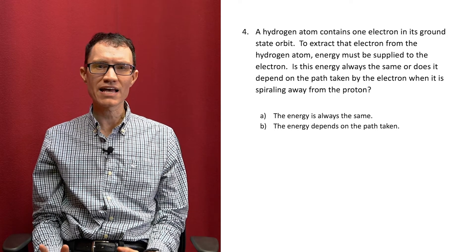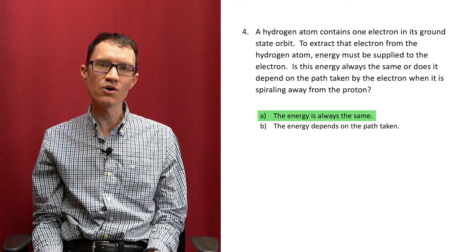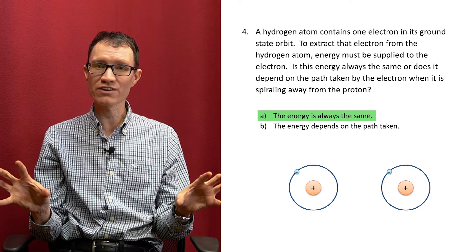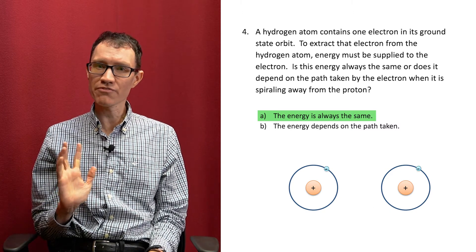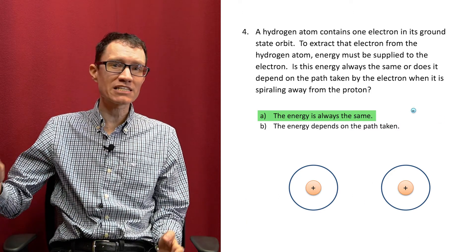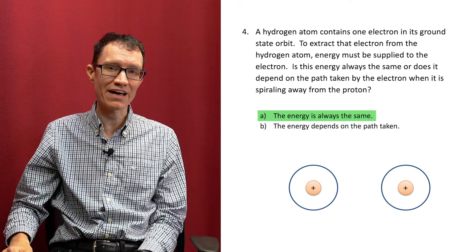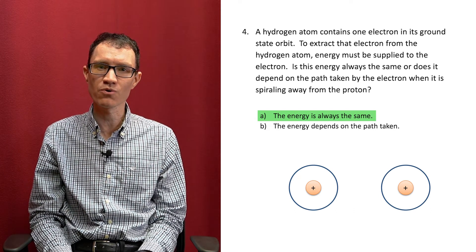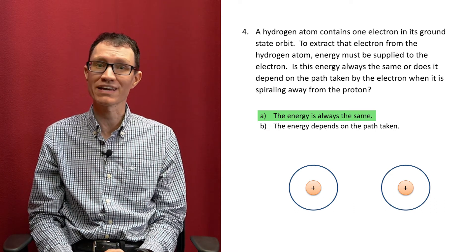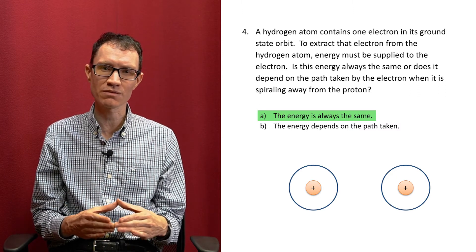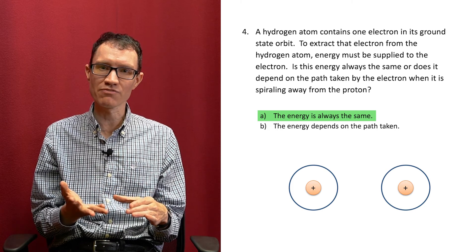The correct answer is A — the energy is always the same. Imagine that you had two identical hydrogen atoms and enough energy were supplied to cause an electron to spiral away. Although the electrons might spiral away along different paths, the energy taken to actually pull the electron away from the host atom would be the same in both cases. This is because the electron in each of those two hydrogen atoms sits at the same level in its potential well.